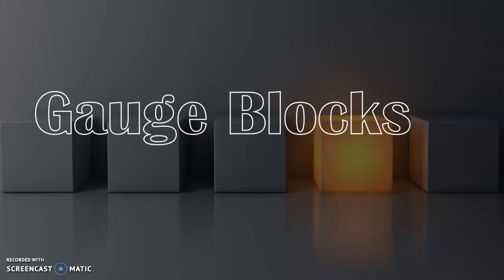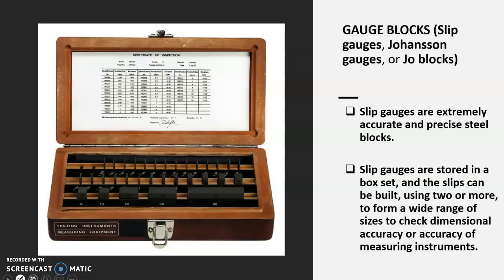Hi all, welcome to the session of gauge blocks. Gauge blocks are otherwise known as slip gauges, Johansson gauges, or jaw blocks. These slip gauges are extremely accurate and precise steel blocks available in a box set having a number of pieces.